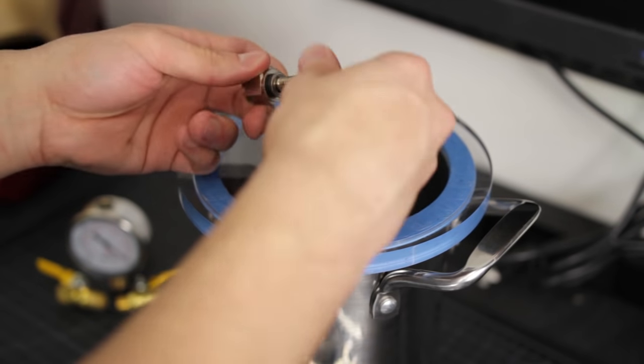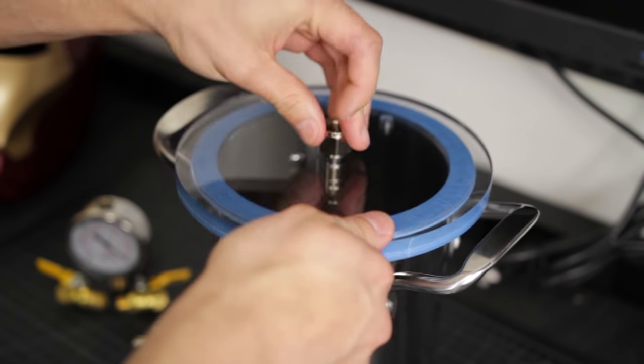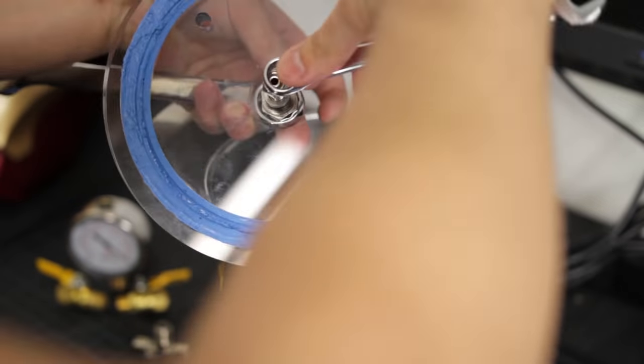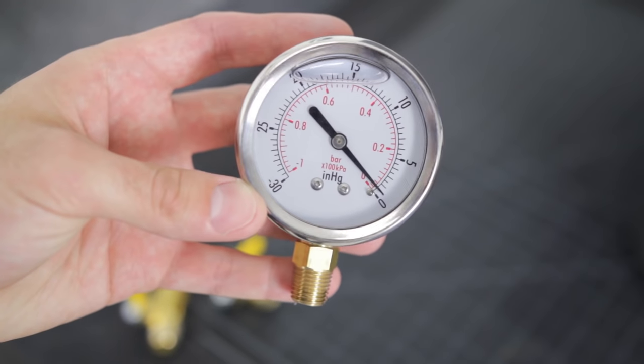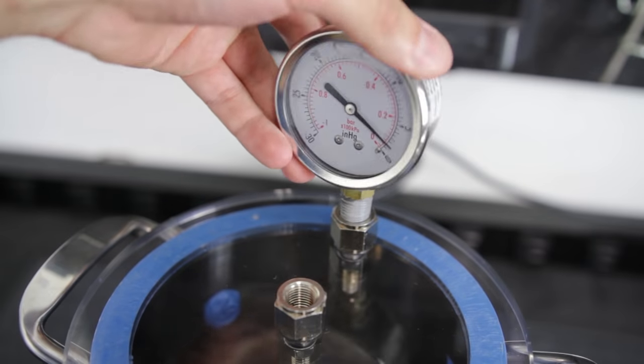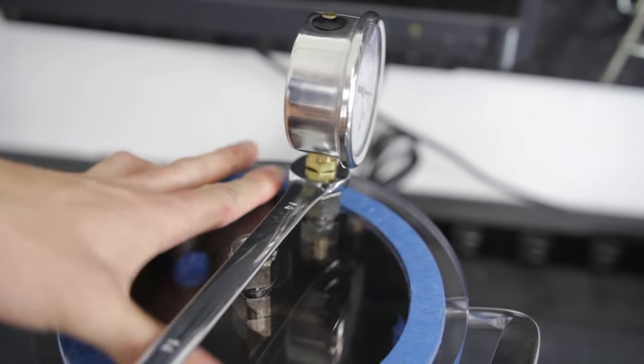I then add two ¼-inch NPT bulkheads to ensure an airtight seal for my fittings. I grab a vacuum gauge with a ¼-inch NPT with a lower mount configuration to monitor the amount of vacuum I'm pulling.